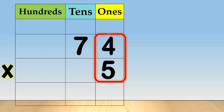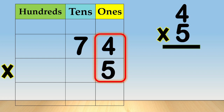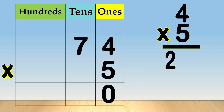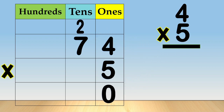So, four times five is equal to twenty. Now, we need to regroup twenty ones as two tens plus zero ones. Write zero in the ones column and carry two tens to the tens column.